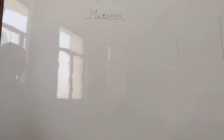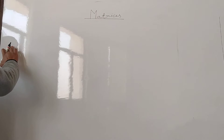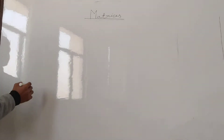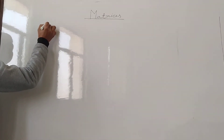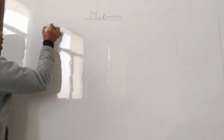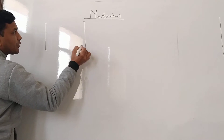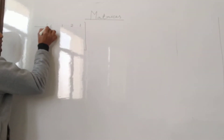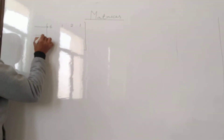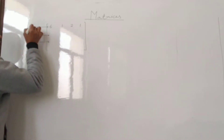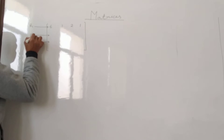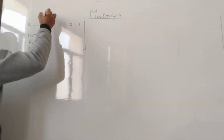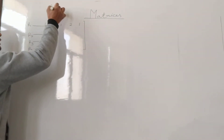Good morning dear students, today we will learn about matrices. Basically, a matrix is just an arrangement of numbers in the form of rows and columns. Suppose we have elements like 6, 1, 2, and 1 arranged in this layout — this type of layout is known as rows. This is the first row R1, similarly the second row R2, R3, and R4.